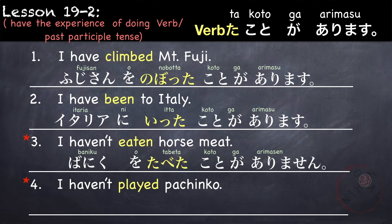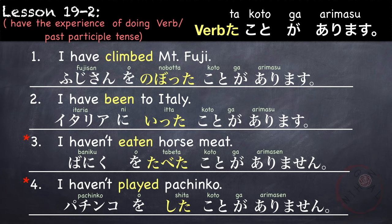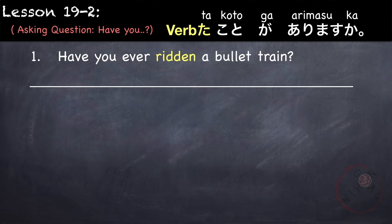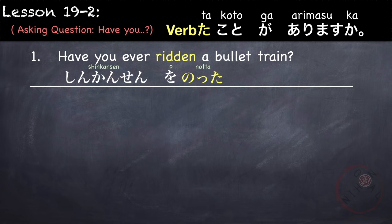Another example: I haven't played pachinko. Pachinko shita koto ga arimasen. Next is asking a question using this pattern — all you have to do is add ka at the end. For example, have you ever ridden a bullet train? Bullet train is shinkansen. Our verb is ride, which is norimasu. In ta form, it is notta. Shinkansen o notta koto ga arimasu ka?